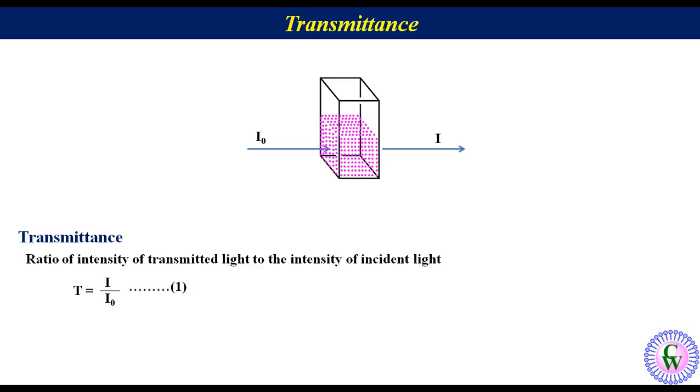it can be shown as T is equal to I upon I0. Label it as equation number 1. From this equation, we can see that the transmittance is a dimensionless quantity. Generally, it is expressed in terms of percentage which is equal to 100 into transmittance that is 100 into I upon I0. Label it as equation number 2.